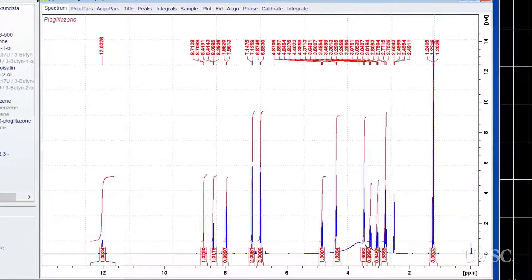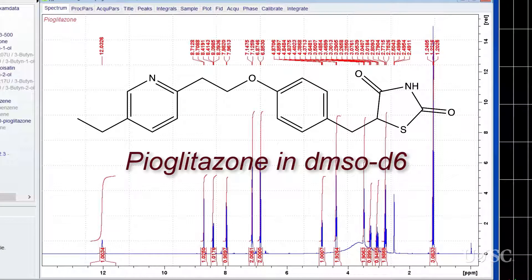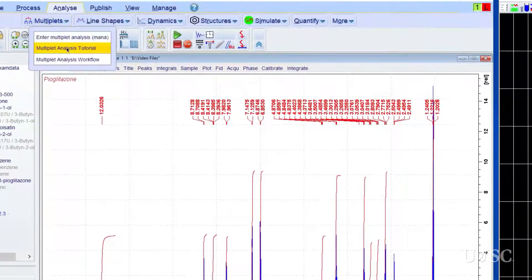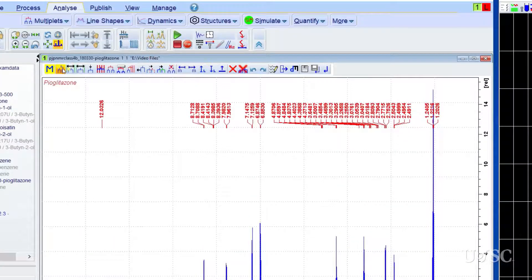The last example is a spectrum of a fairly complex molecule. Pioglitazone is a drug used to treat type 2 diabetes. The broad peak near 3.9 ppm is from water. Despite the overlap, it will have no effect on the multiplet analysis. Let's enter the multiplet analysis tool and run the automatic region detection.